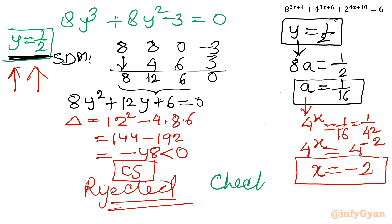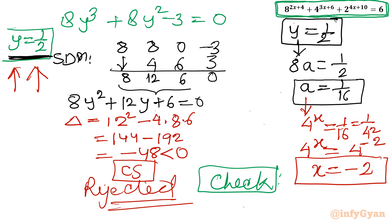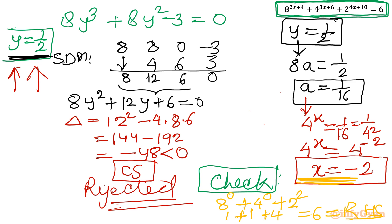Let us verify by substituting x = -2 into the original equation: 8^(2(-2)+4) + 4^(3(-2)+6) + 2^(4(-2)+10) = 8^0 + 4^0 + 2^2 = 1 + 1 + 4 = 6. This equals the right-hand side, confirming x = -2 is the true solution.